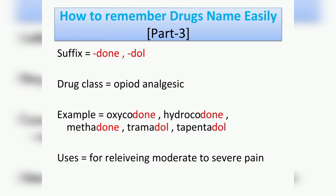The next suffix is '-done' (D-O-N-E) or '-dol' (D-O-L), which belongs to the drug class opioid analgesics. Examples include oxycodone, hydrocodone, methadone, tramadol, and tapentadol. Their usage is for relieving moderate to severe pain.